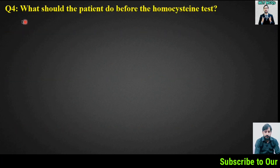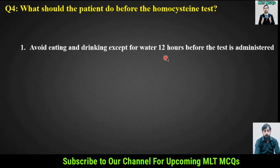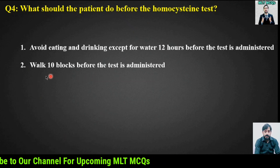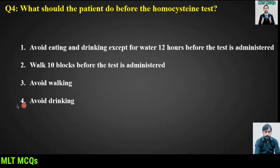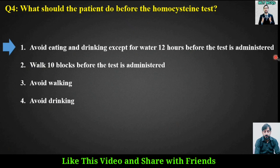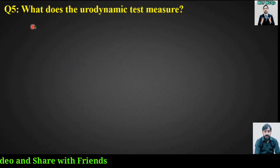MCQ number 4: What should the patient do before the homocysteine test? Options are: avoid eating and drinking except for water 12 hours before the test is administered; walk 10 blocks before the test is administered; avoid walking; or avoid drinking. The right answer is option 1 — avoid eating and drinking except for water 12 hours before the test is administered.